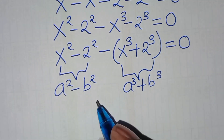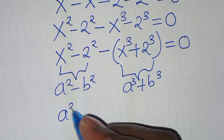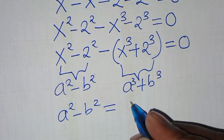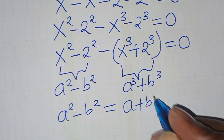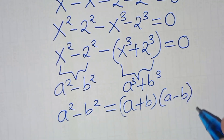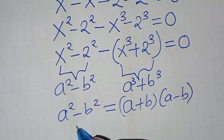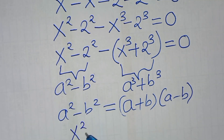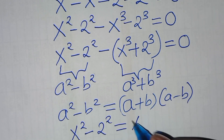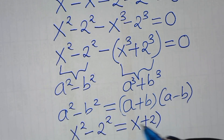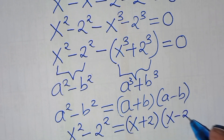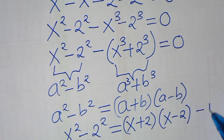Starting with the first part, we have that a squared minus b squared is the same thing as a plus b times a minus b. So x to power 2 subtract 2 to power 2 is the same thing as x plus 2 times x minus 2. Let's call this equation 1.